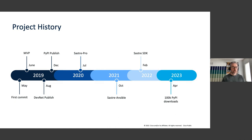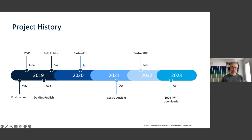This project started back in 2019 as just backup and restore. In December we published it on the PyPI repository. In 2020 we released SASTRE Pro — we'll talk more about that. In 2021 we released SASTRE Ansible, basically a collection to utilize SASTRE within Ansible. In 2022 we released the SDK, and this year we just crossed 100,000 downloads on the PyPI repository. It's been about four years in the works and we constantly add new features and updates.